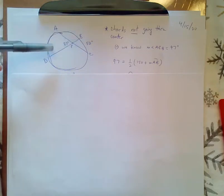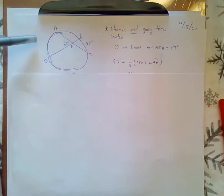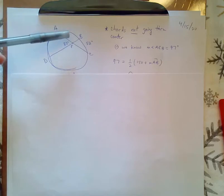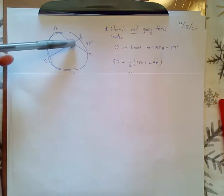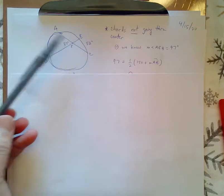Remember, if they go through the center, then the arcs, the minor arcs, are going to be equal to the central angle. In this case, the point E is not the center, so the rule is that...